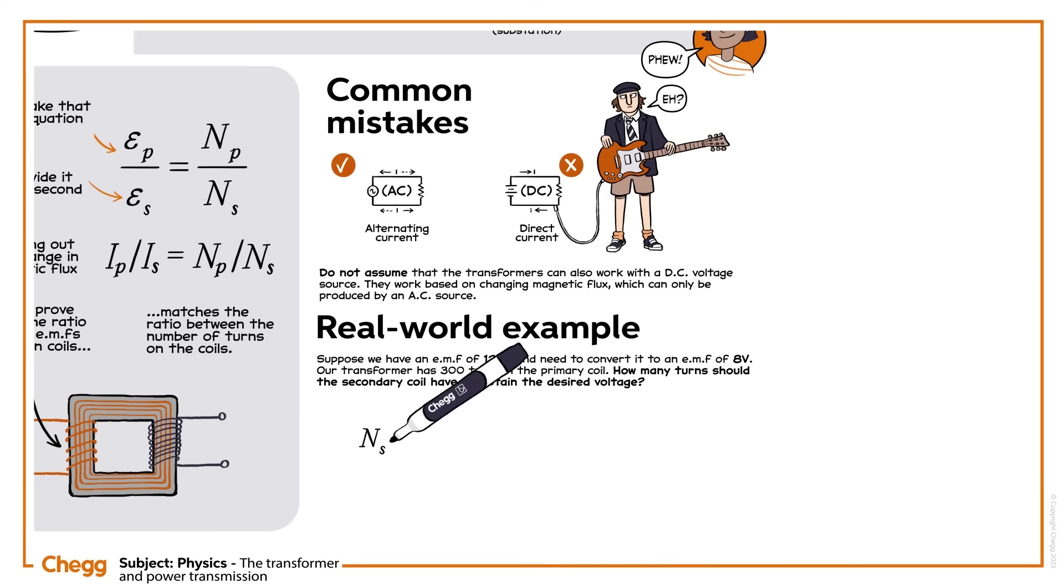Our equation can be rewritten. Substitute in the values we already know, the input and output voltage, and the number of turns in the primary coil. And there's your answer. There should be 20 coils in the secondary coil of this step-down transformer to achieve the desired output.